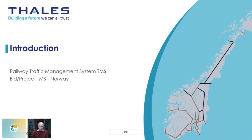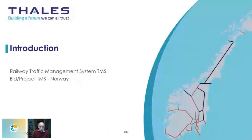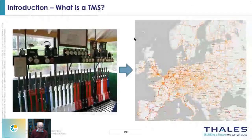Thales provides systems for railway traffic management in an area or even a whole country. In this introduction we will look at railway traffic management systems — often abbreviated as TMS for Traffic Management System. What is a TMS really? What does a TMS do, and why does a railway operation customer want something like this? We will also have a short look at the specific topics in the TMS Norway project.